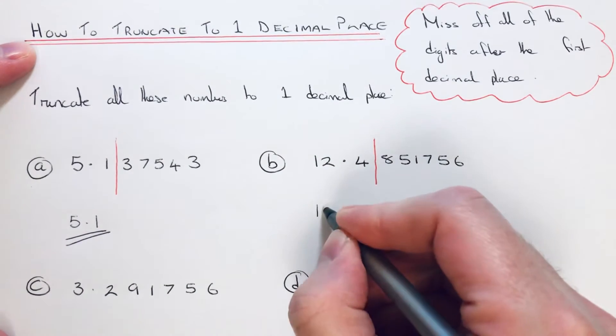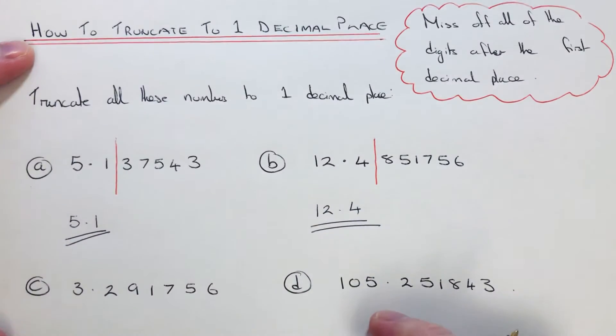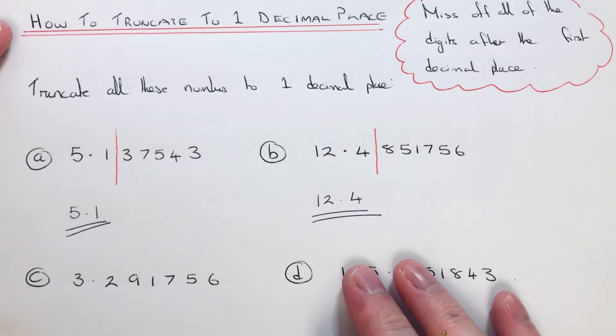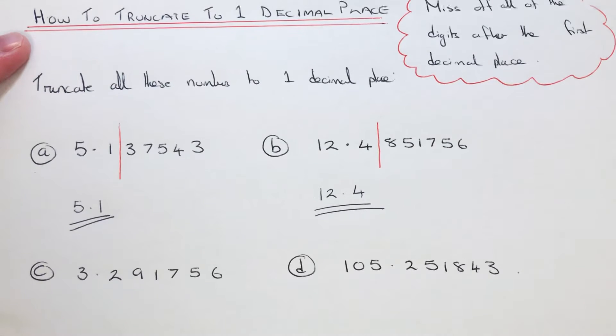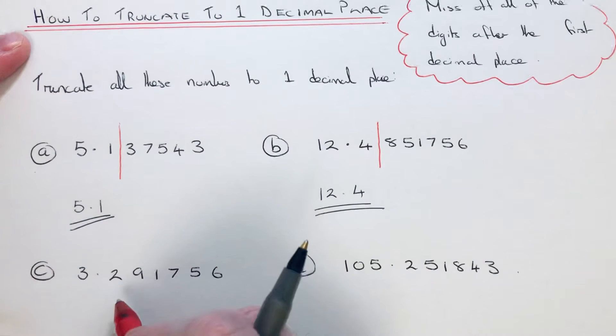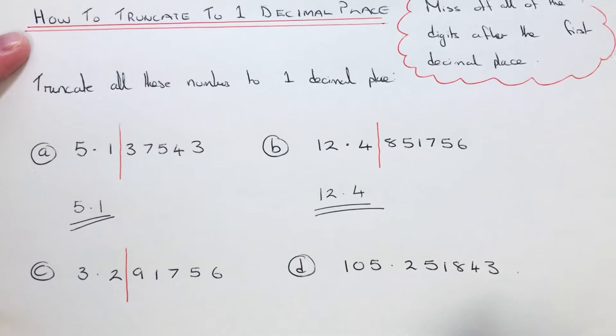The third example is 3.291756. Again, we just need to truncate it to one decimal place, so I put the line in after the first digit after the decimal point. We just copy down these digits here, so it's 3.2.